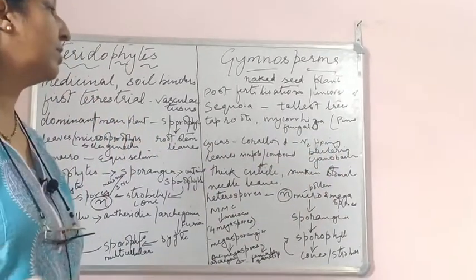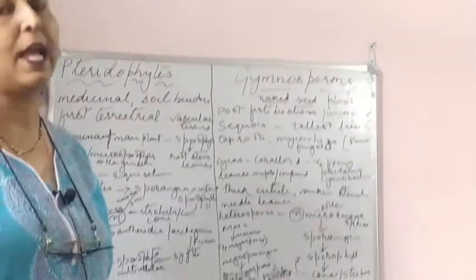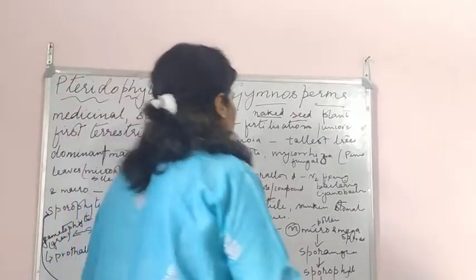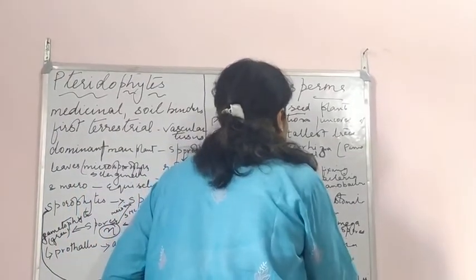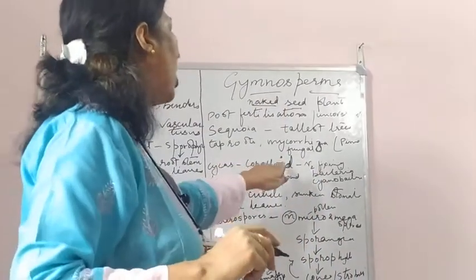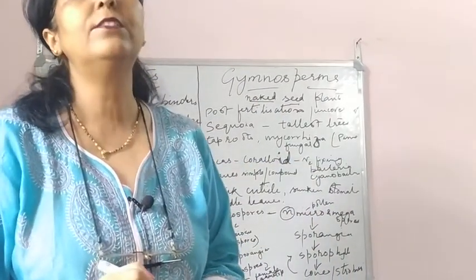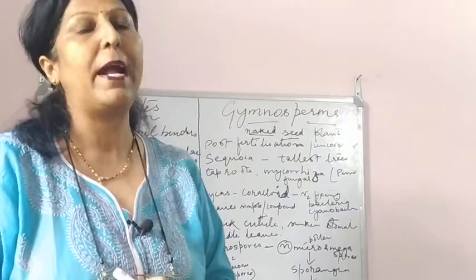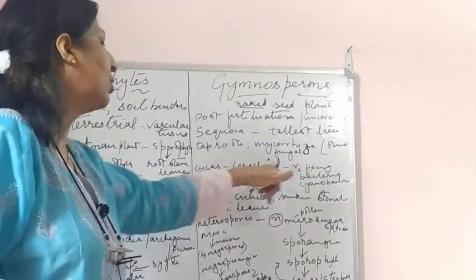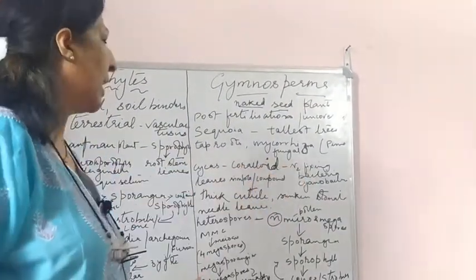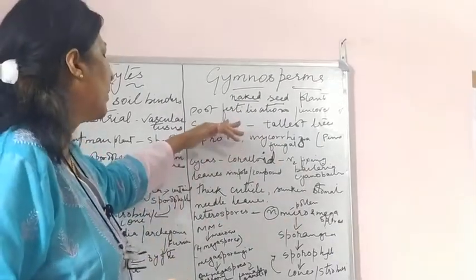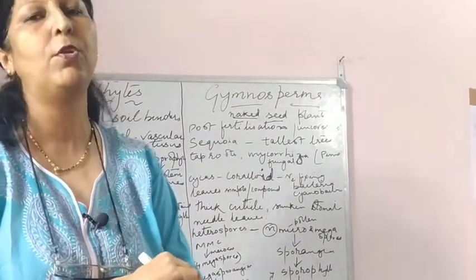In Cycas, the root has a coralloid root association. The difference is: mycorrhiza is a fungal association in Pinus roots, while coralloid root in Cycas contains nitrogen-fixing bacteria, that is cyanobacteria. So Cycas roots have a cyanobacterial association.